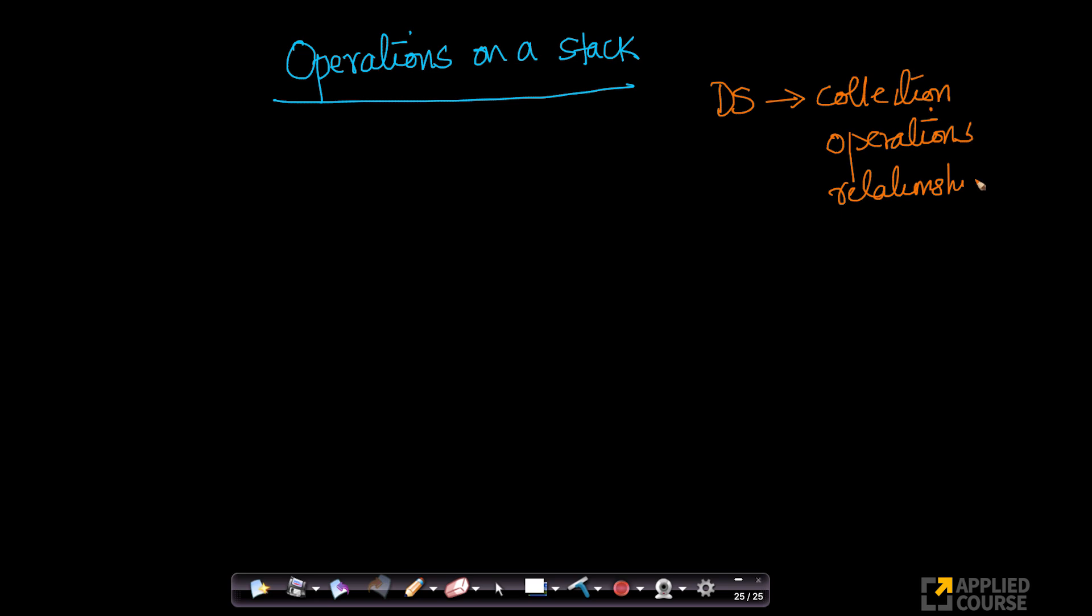And of course, there is also a relationship amongst the items. These are the three aspects of a data structure.